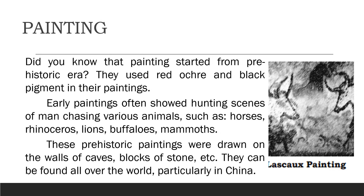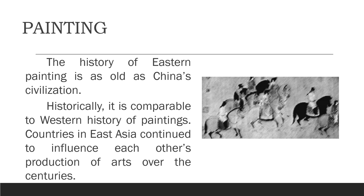Did you know paintings started from the prehistoric era? They used red ocher and black pigment on their paintings. Early paintings often showed hunting scenes of man chasing various animals such as horses, rhinoceros, lions, buffaloes, and mammoths. These prehistoric paintings were drawn on the walls of caves, blocks of stone, and others. They can be found all over the world, particularly in China. The history of Eastern painting is as old as China's civilization.